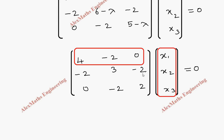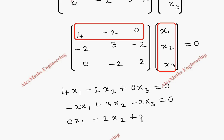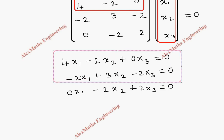Multiplying the rows with the column vector, we get the equations: 4x1 minus 2x2 plus 0x3 = 0; minus 2x1 plus 3x2 minus 2x3 = 0; and 0x1 minus 2x2 plus 2x3 = 0. We take any two equations and use the cross multiplication method.